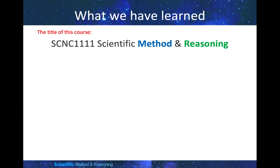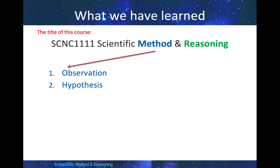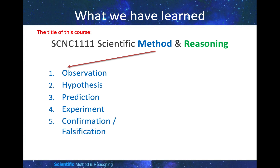Step 1: Observation. Step 2: Hypothesis. Step 3: Prediction. Step 4: Experiment. And Step 5: Confirmation or falsification.